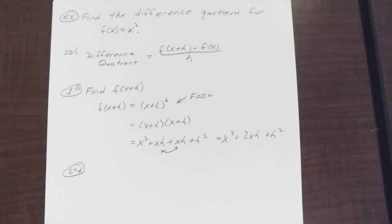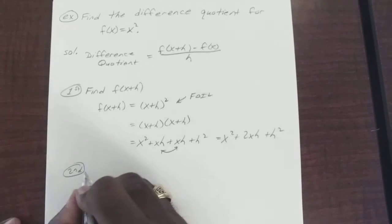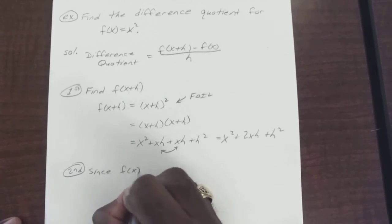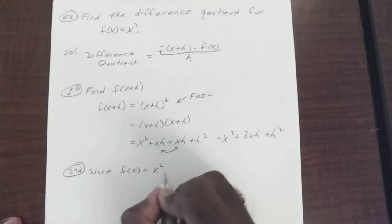So since you already have your f of x, now you're just going to plug all of them into your formula. Since f of x equals x squared,